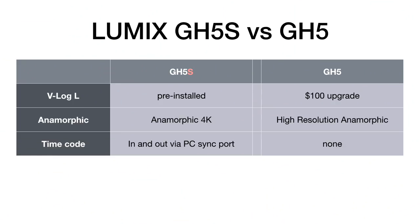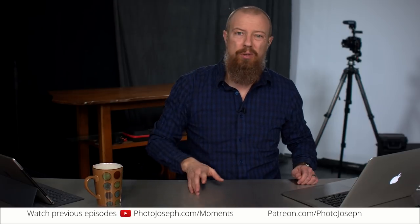Next up is timecode support — in and out via the PC sync port. Someone already asked if this could be added to the GH5. Right now I don't know, but I don't think it can. That PC port — the one you've looked at and wondered what it's for — is for an old-fashioned PC sync flash connection: a physical trigger with no TTL data, simply telling the flash to fire. That port is now double duty on the GH5S: still a PC sync port, but also used for timecode. I believe that requires special hardware, so I don't think it can be added to the GH5 via firmware.